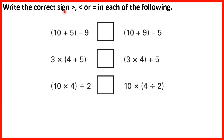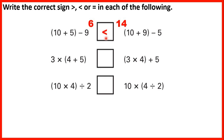Write the correct sign — greater than, less than, or equal to — in each of the following. Here we have calculations with brackets, so we always do what's in the brackets first. Here we have (10+5) so 15, minus 9 is 6. And here we have (10+9) so 19, minus 5 is 14. 6 is less than 14, so we need a less than sign.